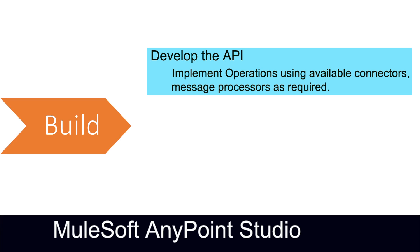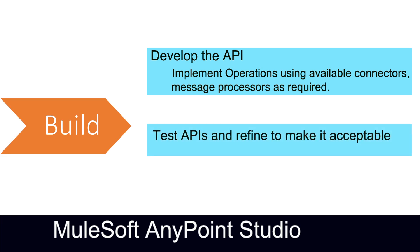I won't go into the nitty-gritties of Anypoint Studio features, as I have already created videos on this channel explaining how to do the implementation, how to use a connector, and how to import OpenAPI or RAML specifications and build on top of that. During the build or implementation phase, we also do unit testing and integration testing of our APIs, refining them until everything is acceptable, at which point we move to the next stage — the deploy stage.